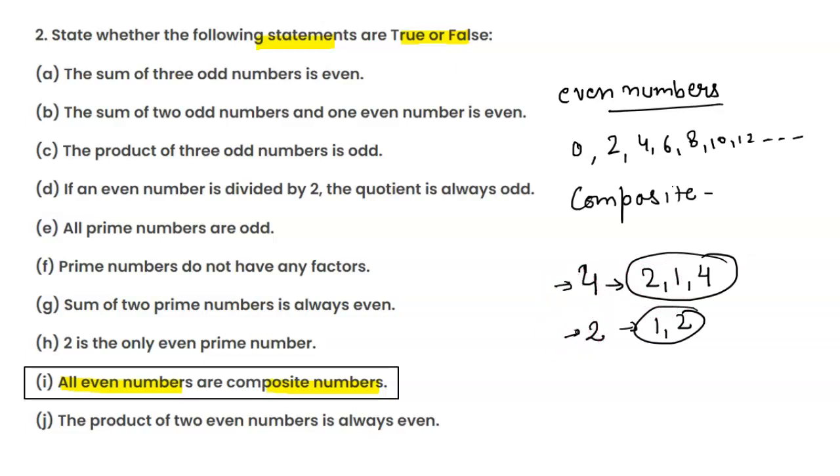But 2 is a prime number. Now, what do you say? Are all even numbers composite numbers? No. Because 2 is an even number, but it is a prime number, not a composite number. So, the given statement is false.